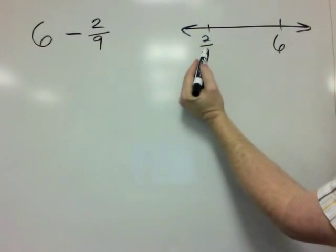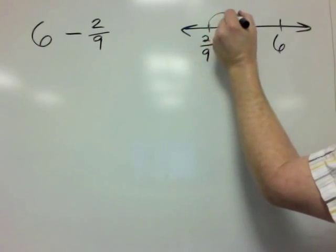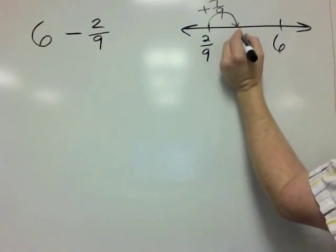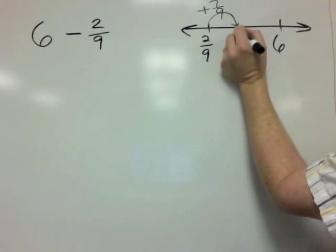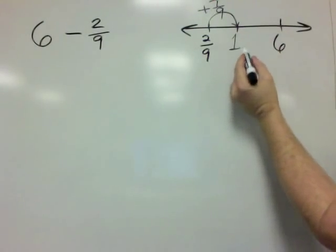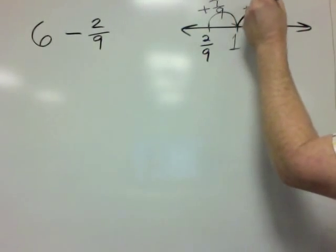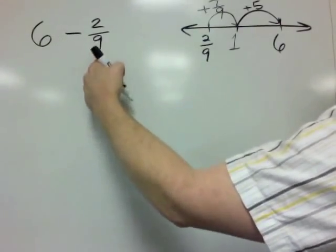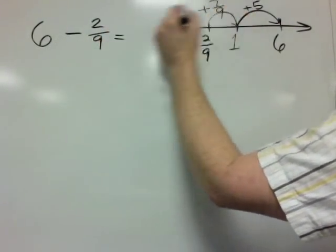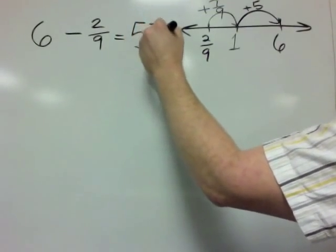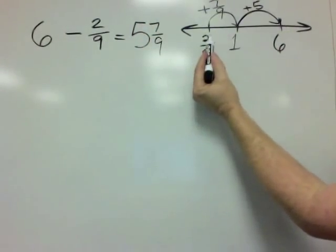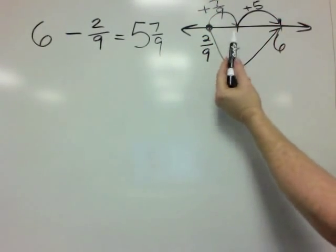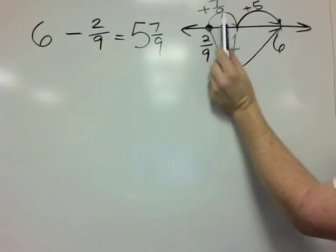2 ninths is less than 1 whole. So if I add 7 ninths, I'm going to end up at 1 whole right here. Then if I add 5 wholes, I'm going to get to 6. So the difference between 2 ninths and 6 is equal to 5 wholes plus 7 ninths, because that's what we had to add to the 2 ninths to get all the way to 6.